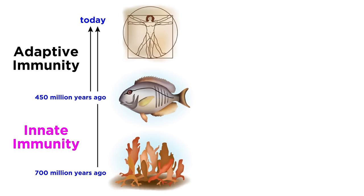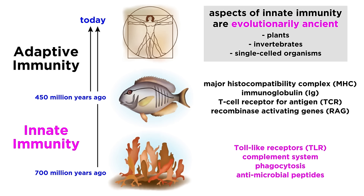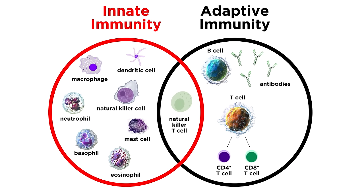The innate immune system is an evolutionarily ancient defense system, with elements conserved across plants, invertebrates, and even single-celled organisms. It is called the innate immune system because it consists of immune mechanisms that are hardwired to quickly recognize and neutralize a broad range of threats, regardless of previous exposure. It differs from the adaptive immune system, which relies on highly antigen-specific defenses that take some time to launch and which are strengthened by repeated exposure to the antigen.